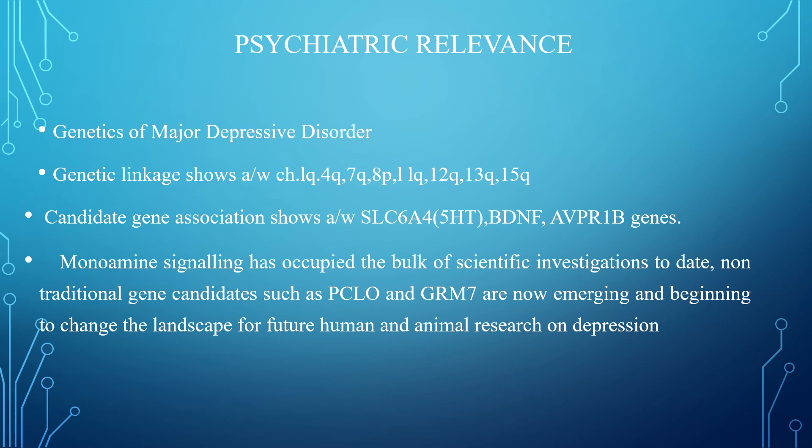Genetics of major depressive disorder: genetic linkage shows association with chromosomes 1Q, 4Q, 7Q, 8P, 11Q, 12Q, 13Q, and 15Q. Candidate gene associations show SLC6A4, BDNF, and AVPR1B. Monoamine signaling has occupied the bulk of scientific investigation to date. Non-traditional gene candidates such as PCLO and GRM7 have now emerged and are beginning to change the landscape for future human and animal research on depression.